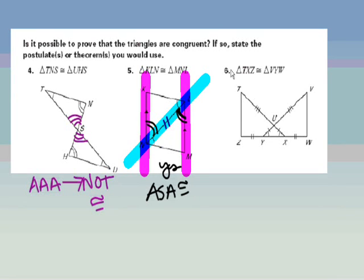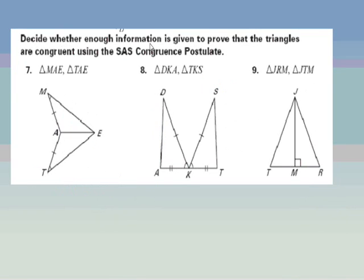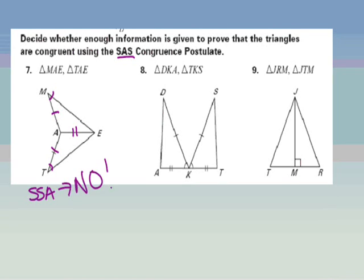Number 6 is for you to answer in the notes check. For the next pair: checking if we have enough information. We have one side, one angle, and the shared side — but the angle is not between the two sides. So I have SSA. SSA is a no-go — no bad words in triangle congruency.